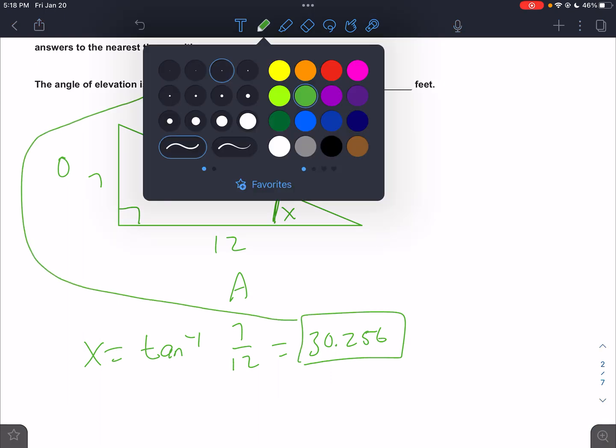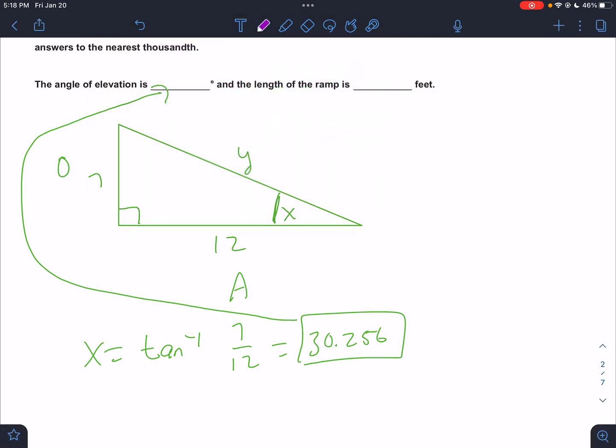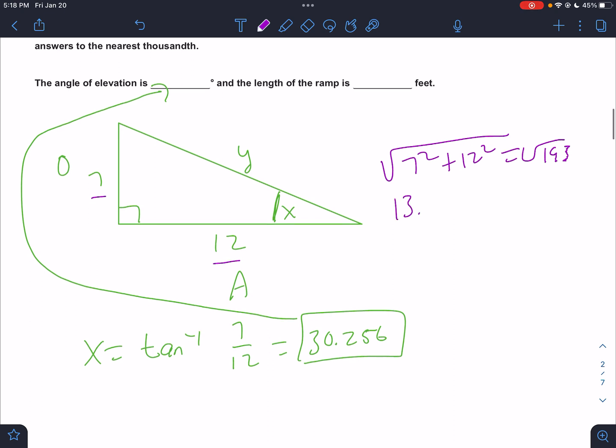The second answer is I want y, the hypotenuse. Well, if I know two legs, then I can just do Pythagorean theorem. That'd be the square root of 7 squared plus 12 squared, which is the square root of 193. But they want us to round to the nearest thousandths, so that would be 13.892. Got them.